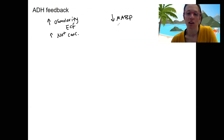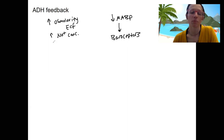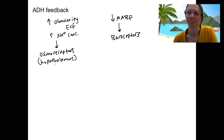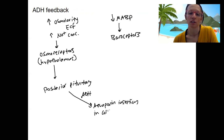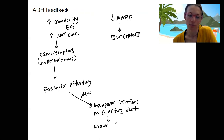They're detected by different things. Mean arterial blood pressure is going to be detected by baroreceptors, and osmolarity is going to be detected by osmoreceptors. These osmoreceptors are in the hypothalamus, which makes a lot of sense because the hypothalamus regulates thirst and also regulates the posterior pituitary. The posterior pituitary releases ADH, which triggers aquaporin insertion in the collecting duct and thereby triggers water reabsorption — a useful response if we have high osmolarity.